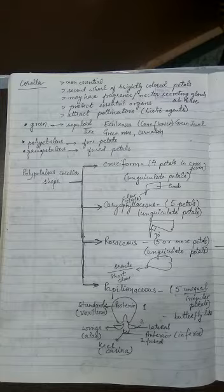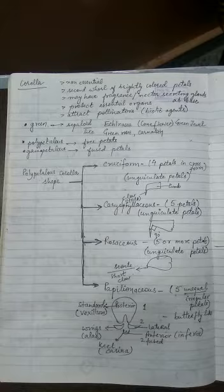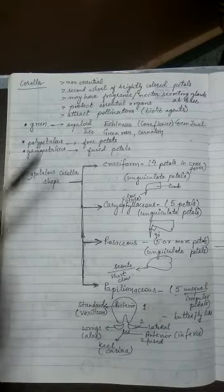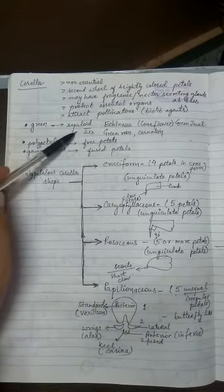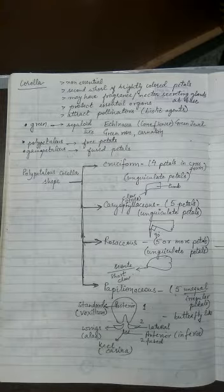So remember they are the non-essential ones. Second whorl of brightly colored petals. And they may have fragrance. They may have nectar secreting glands at the base. And they protect the essential organs. Exceptional plants are also there where corolla becomes green in color. And such corolla would be called as sepaloid type. Then just like in the case of the calyx, we may have two types of corolla.